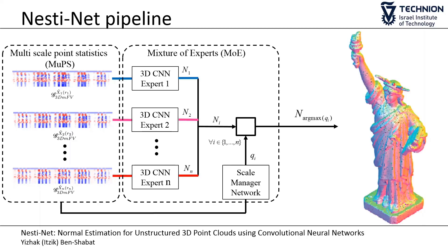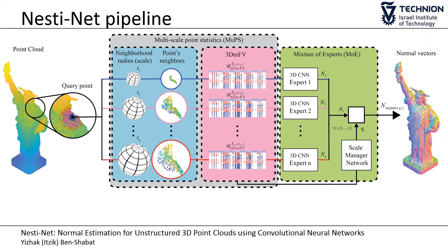The output normal of the point is the normal associated with the expert with the highest score. We name this normal estimation pipeline NestyNet. We train the network using a mixture of experts loss, which encourages specialization of the different expert networks. Note that while at train time all experts perform the normal estimation computation, at test time only one expert performs the computation.